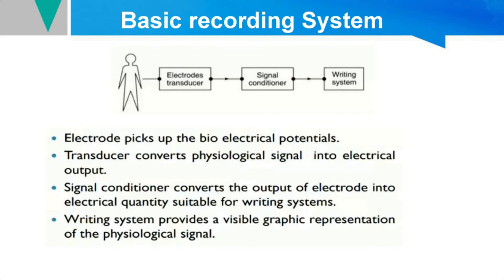This is how the recording system works. The bioamplifier acts as an intermediate between the electrodes and the display unit or output unit. The signal conditioner functions as the bioamplifier — it picks up signals from the electrode and passes the amplified signal to the display unit, which could be a pen recorder or a CRO used for telemetry purposes.